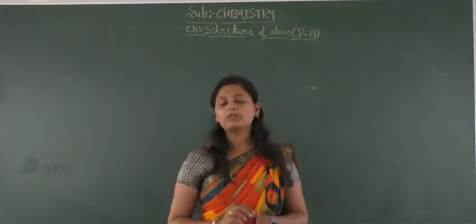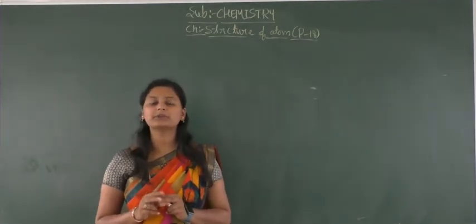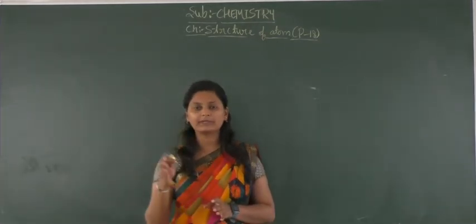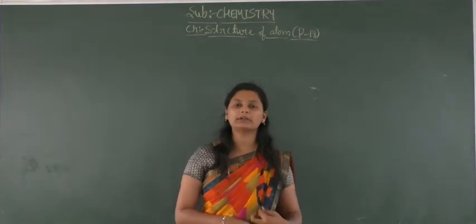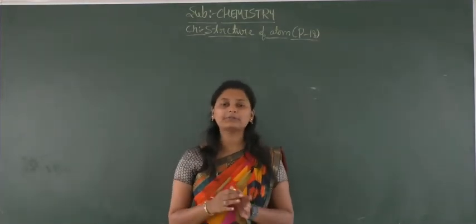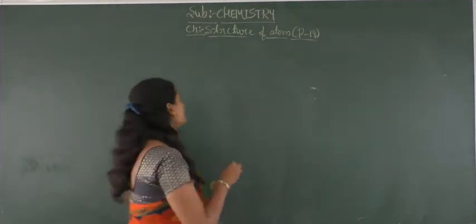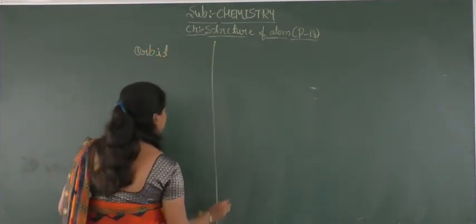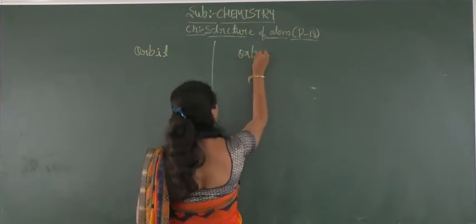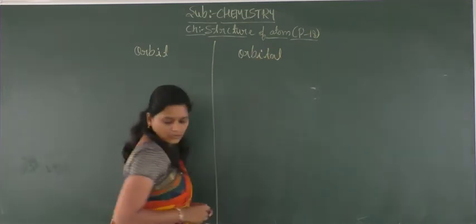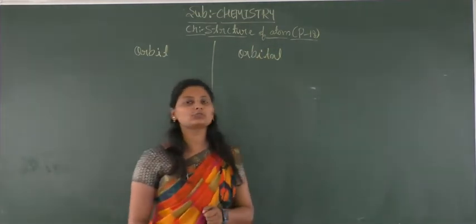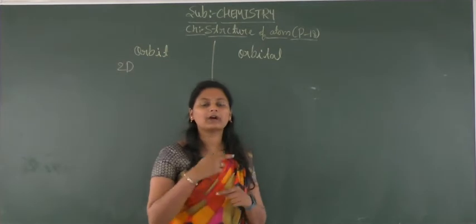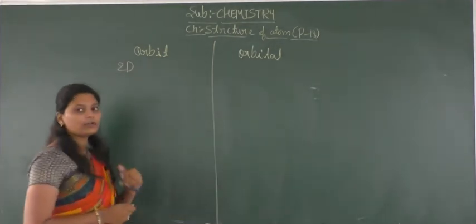In today's class, we will discuss about the difference between orbit and orbital. We know both atomic models involve the orbit and the orbital from the quantum mechanical model. An orbit is a two-dimensional path where the electrons are revolving around the nucleus.